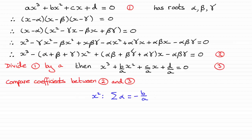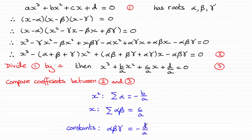Now, if we look at the coefficients of x, you'll notice that I've got here the sum of the products of pairs of roots, and that must be equivalent to c over a. So if we write that in, we've got this notation here — sigma of alpha beta — which is basically the sum of the pairs of the roots, and it's going to be equal to c over a. And if we compare now the constant on the end here, then you can see that alpha beta gamma must be equal to negative d over a.